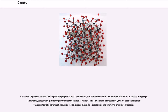The different species are pyrope, almandine, spessartine, grossular — varieties of which are hessonite or cinnamon stone and tsavorite — uvarovite, and andradite. The garnets make up two solid solution series: pyrope-almandine-spessartine and uvarovite-grossular-andradite.